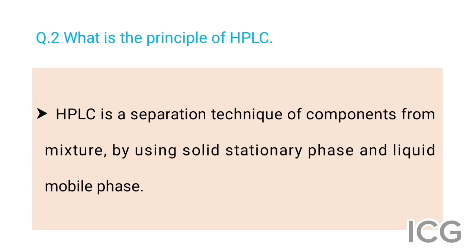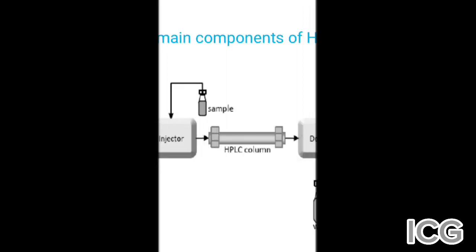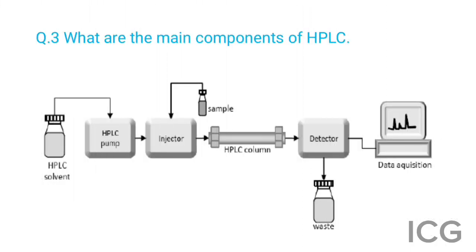The next question is: what is the principle of HPLC? The answer is HPLC is a separation technique of components from a mixture by using a solid stationary phase and a liquid mobile phase. The next question is: what are the main components of HPLC? The answer is: first, HPLC solvent; second, HPLC pump; then injector;